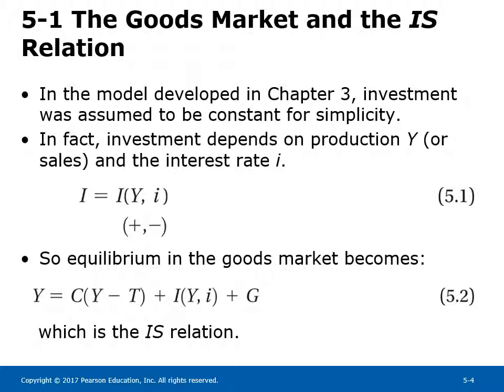In the model developed in Chapter 3, investment was assumed to be constant for simplicity. In fact, investment depends on production Y and the interest rate I, as Equation 5.1 shows. The plus sign under Y and the minus sign under I indicate that an increase in sales leads to an increase in investment, and an increase in interest rates leads to a fall in investment. We continue to assume inventory investment equals zero, so production is always equal to sales. Now that investment is also a function of output, for a given value of the interest rate, demand is an increasing function of output for two reasons: an increase in output leads to an increase in income, disposable income, and hence consumption; and an increase in output also leads to an increase in investment.